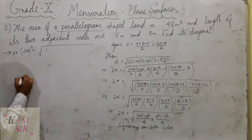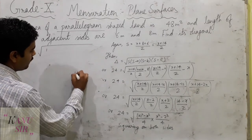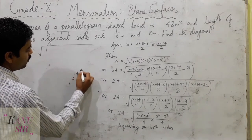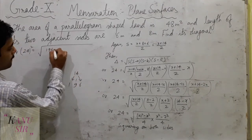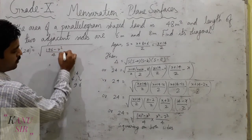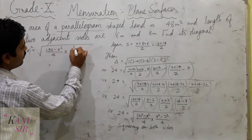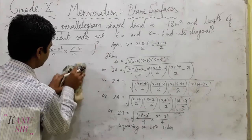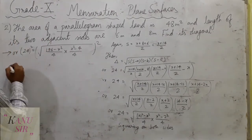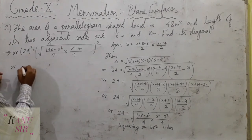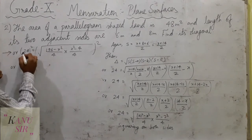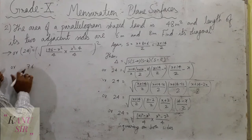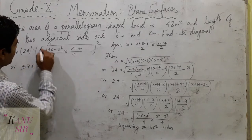Squaring on both sides: 24² = 576 and 14² = 196. So we get 576 equals (196 − x²) divided by 4.